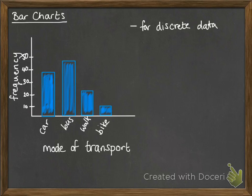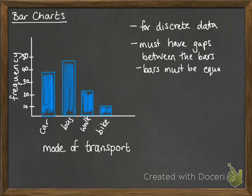Bar charts are for discrete data, so those individual categories. They must have gaps between the bars, and the bars must be of equal width.